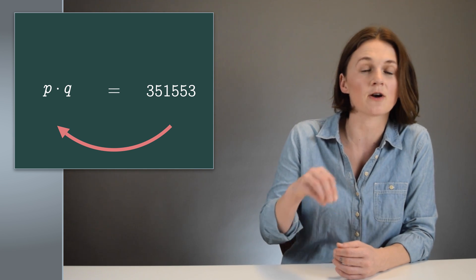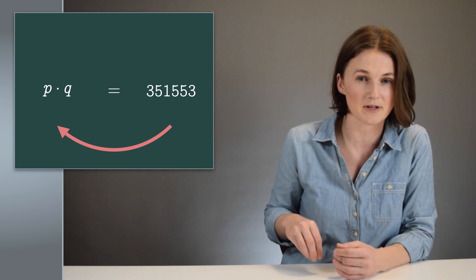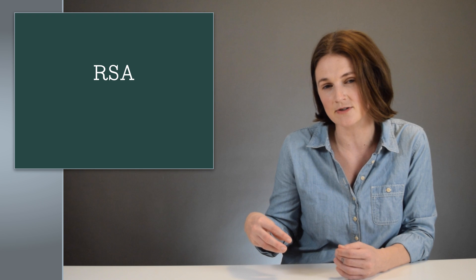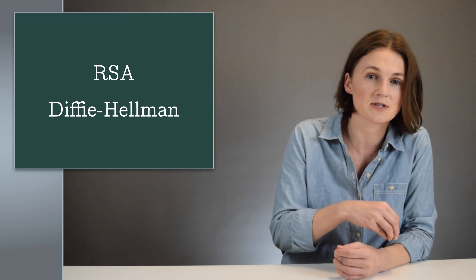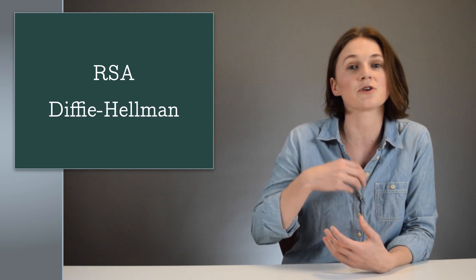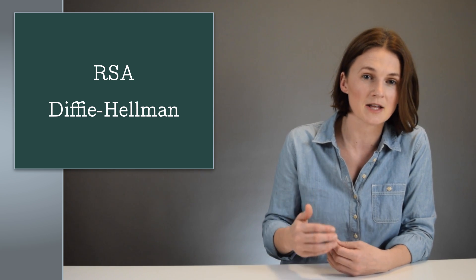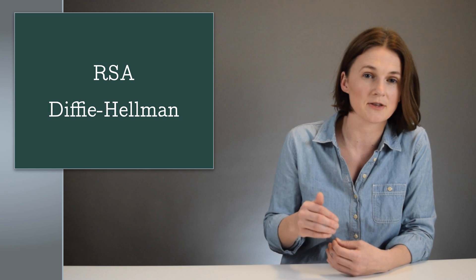Hard math problems are at the core of public key cryptography. RSA uses prime factorization, Diffie-Hellman uses the discrete log problem. There's also a version of Diffie-Hellman that's based on elliptic curves. If you can quickly solve the underlying problem, you can break the cryptography.